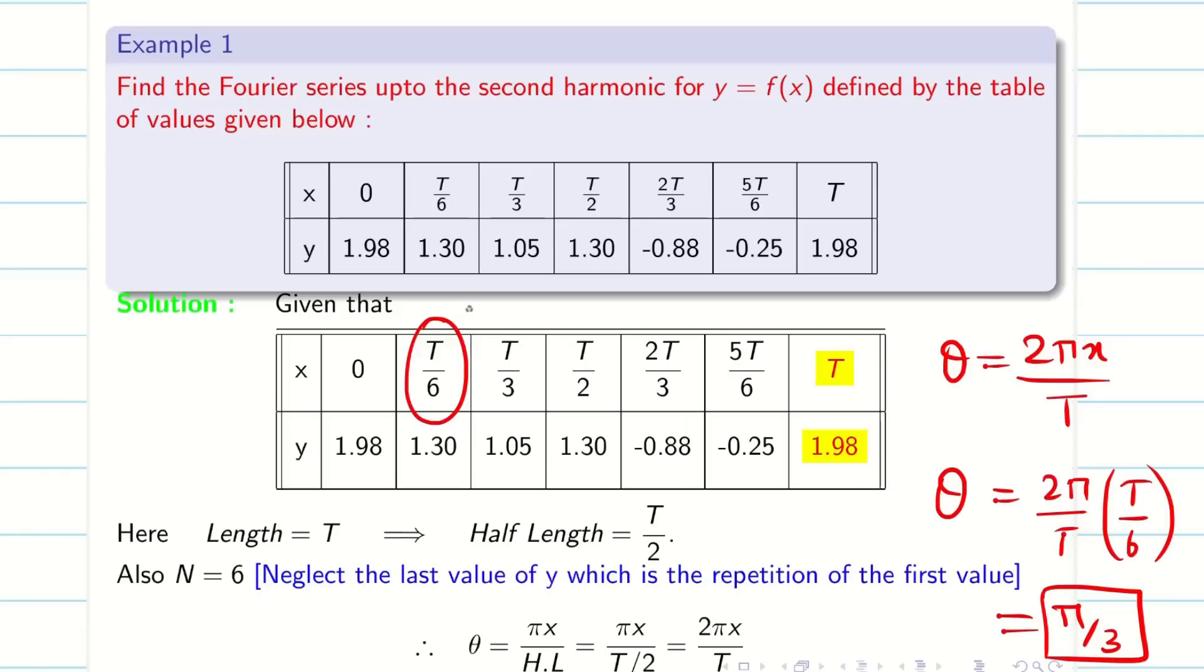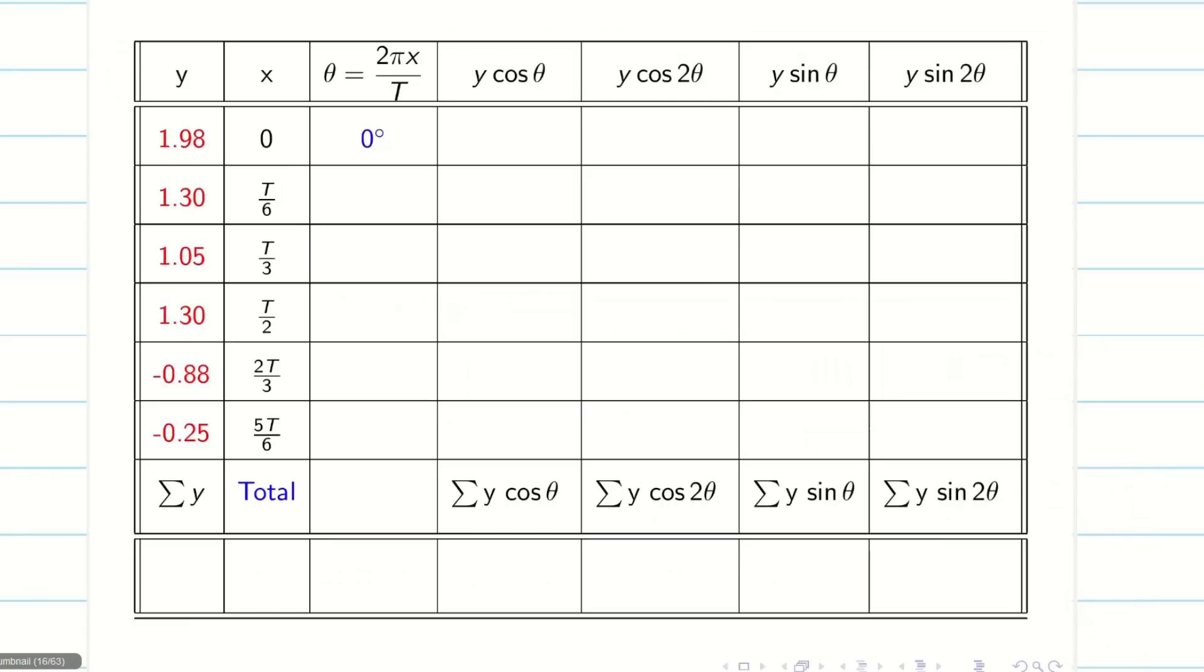So pi by 3 is 60 degrees. Finding the first degree is very important. If you find it correctly, then it's nothing. We found the first degree is 0 and the second degree is 60, so there will be an increment of 60 like 0, 60, 120, 180, 240, 300, and the last one is deleted.